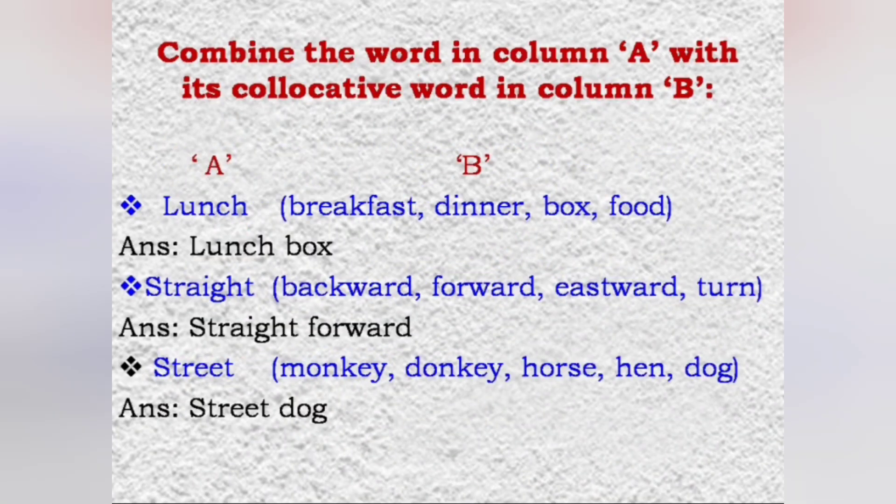The word box goes well with lunch. So, the answer is lunch box. Forward goes well with straight. So, the answer is straightforward. And dog goes well with street. And the answer is street dog.